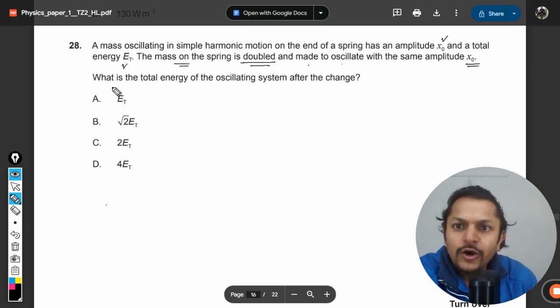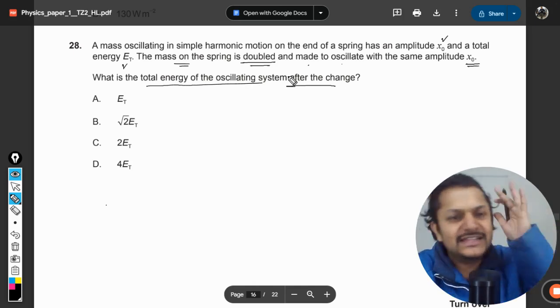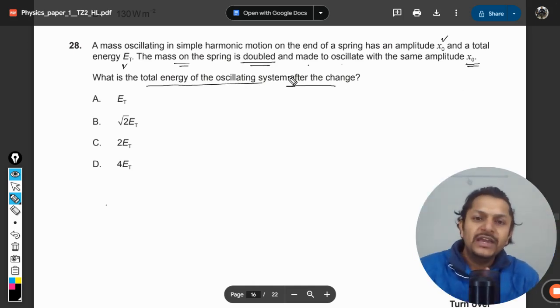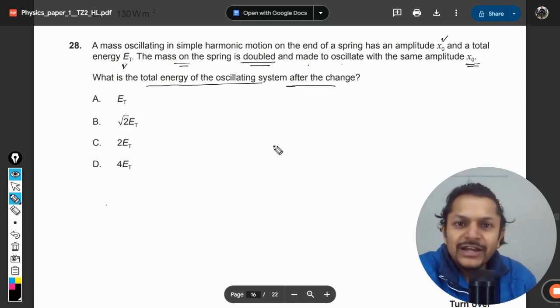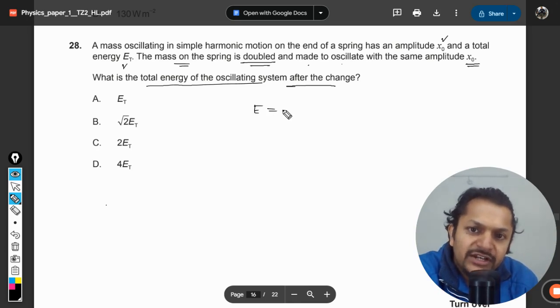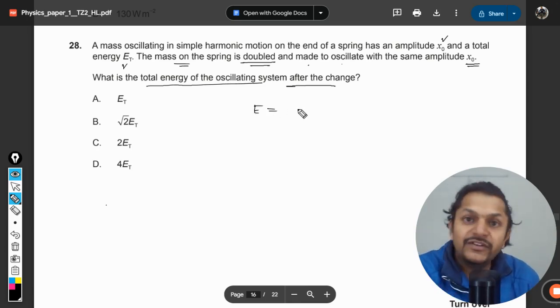What is the total energy of the oscillating system after the change? Okay, so here there is a very big catch. I will tell you what. The formula for the potential energy, elastic potential energy, which is to be used in the case of spring mass system, is given by ½k·x₀².